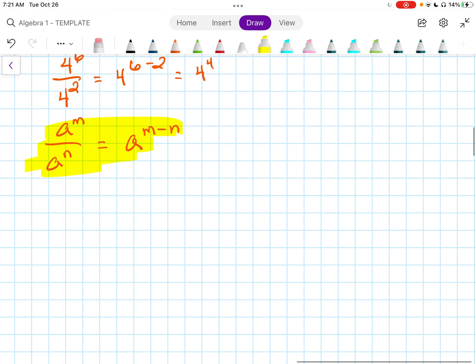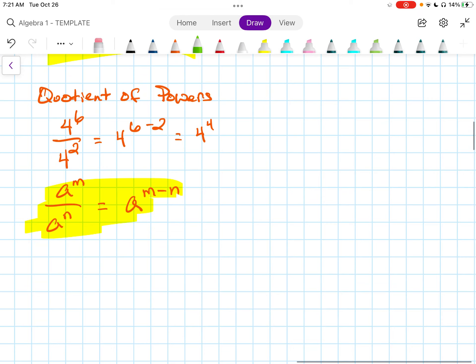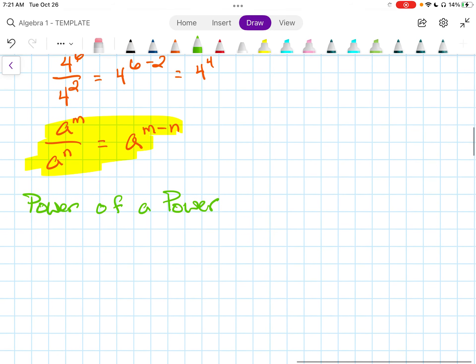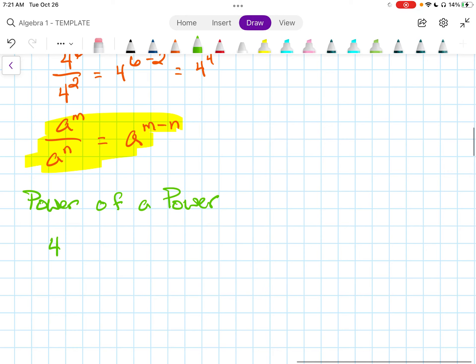And power of a power property. Let me use another color for that. Power of power. This would be something like if we had 4 to the 6th squared, that would be equal to 4 to the 12th. You would multiply those. Here, let me write that step in there. We'd say 6 times 2, and then we'd say 4 to the 12th.